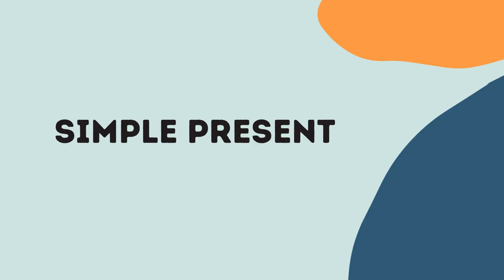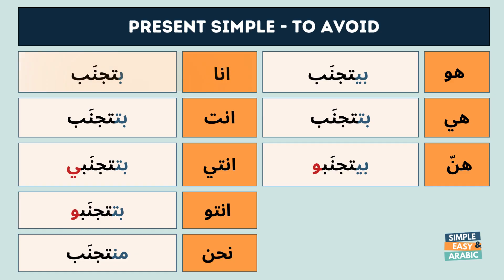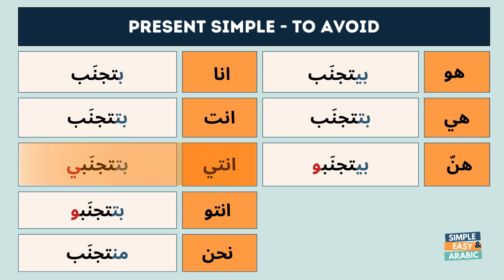Let's have a look at the present tense. أنا بتجنب. أنت بتجنب. أنتي بتجنبي. أنتو بتجنبو. نحن بنتجنب.